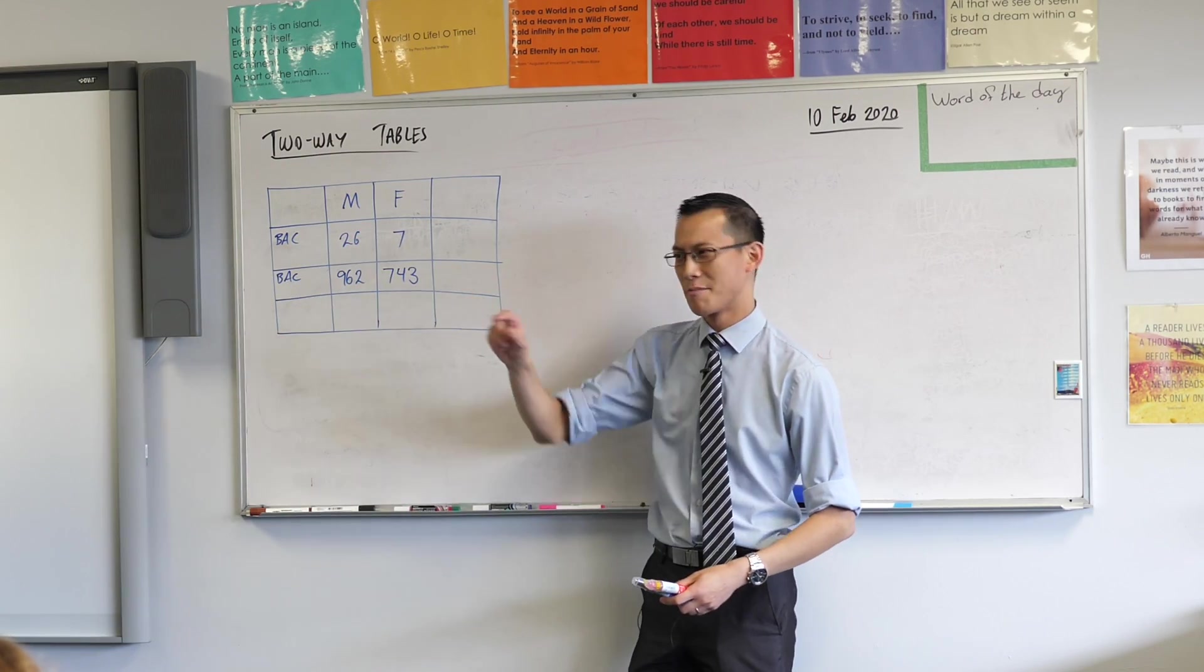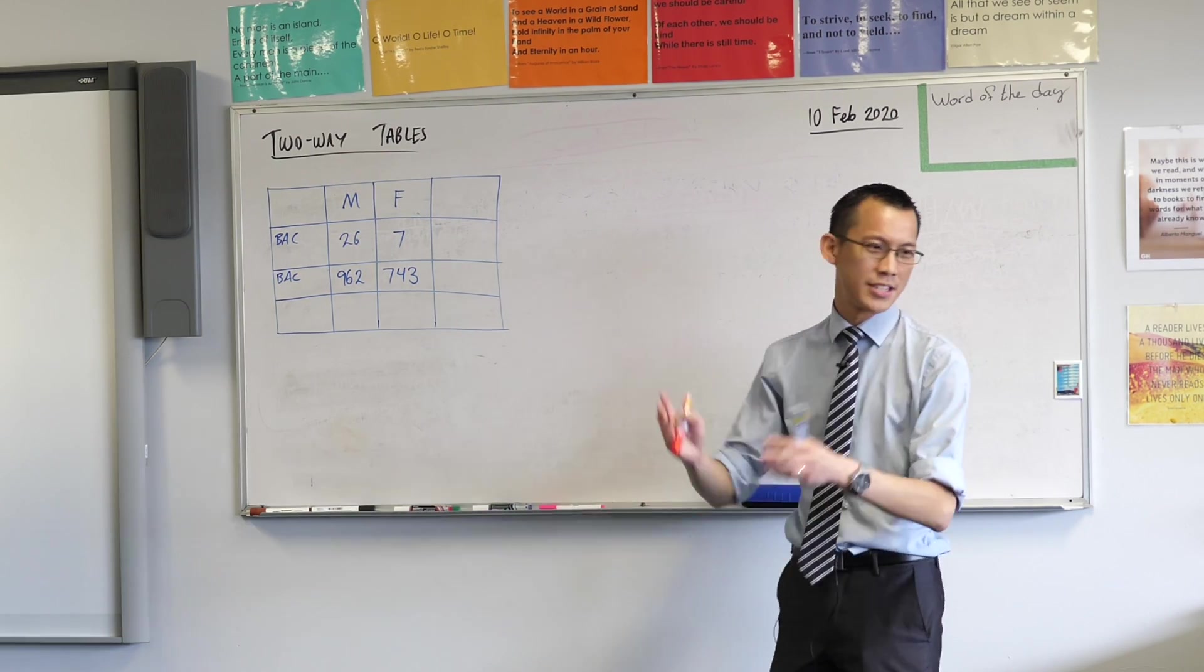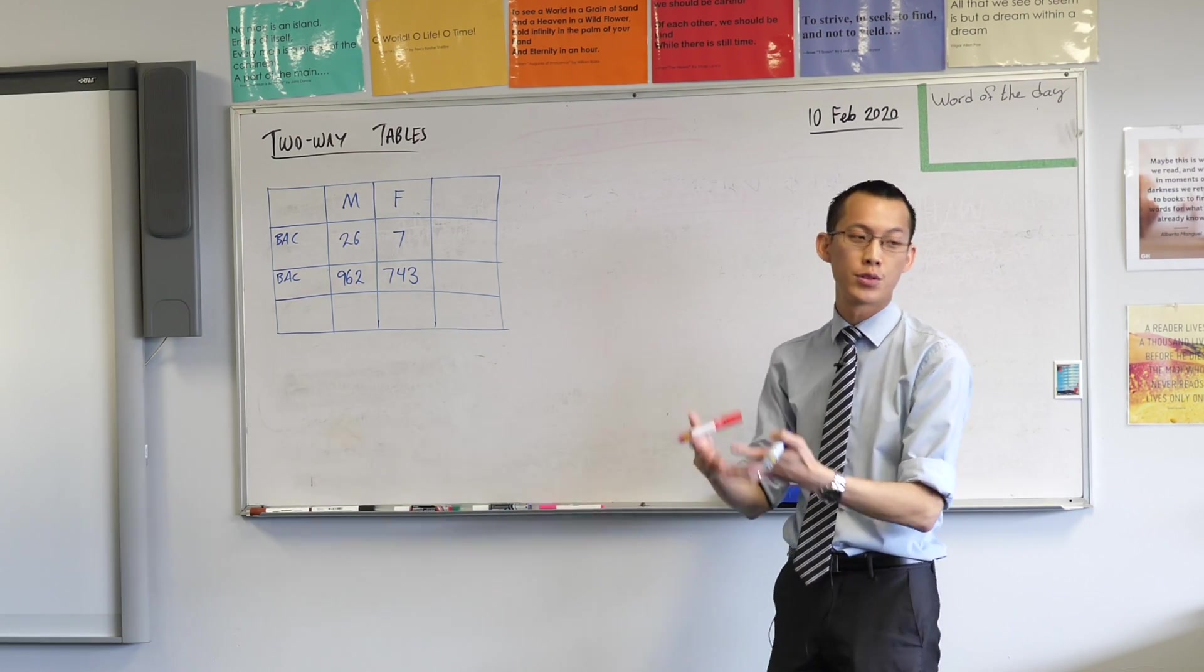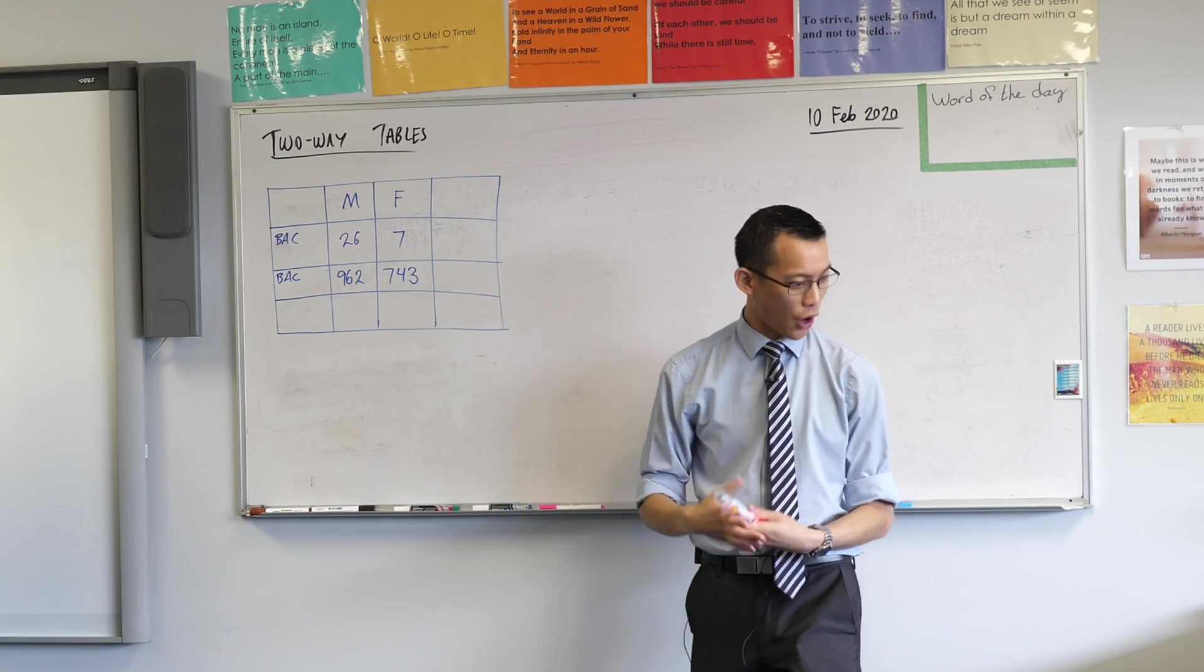So we've got two groups of people. The top one, as you would hope, because it's smaller, these are the people who are breathalyzed and they're over the limit. So we're just going to mark that as greater than 0.05.